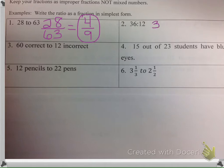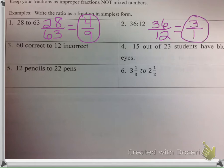Example number 2: you have 36 twelfths, that's 36 over 12, and that can be simplified. 12 goes into both of them — 12 goes into 36 three times, and 12 goes into 12 one time. Again, that has to be written as 3 over 1, not 3. When you're writing a ratio, you have to have a denominator — you have to have a fraction.